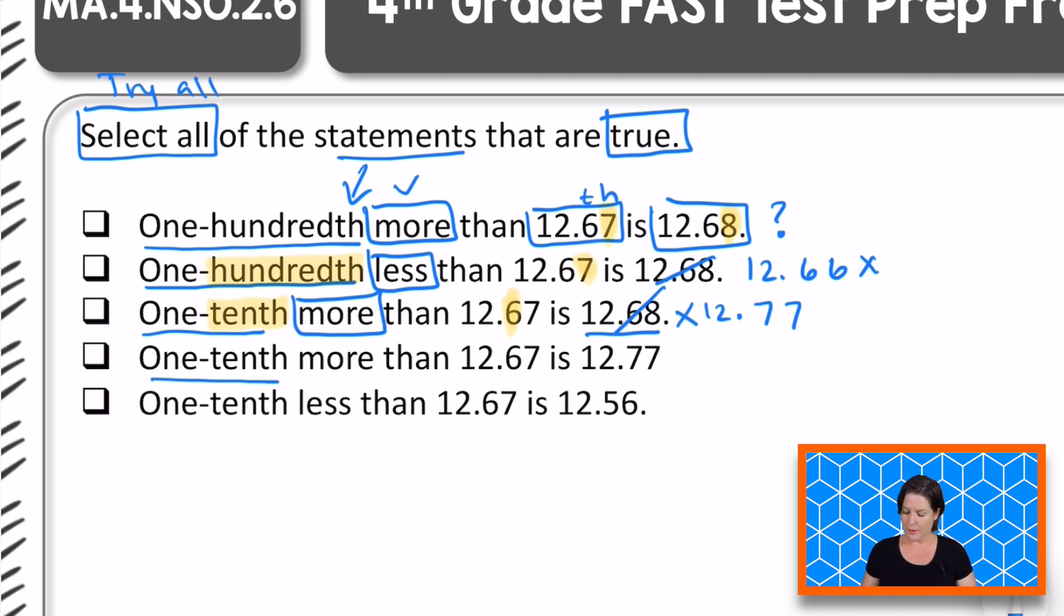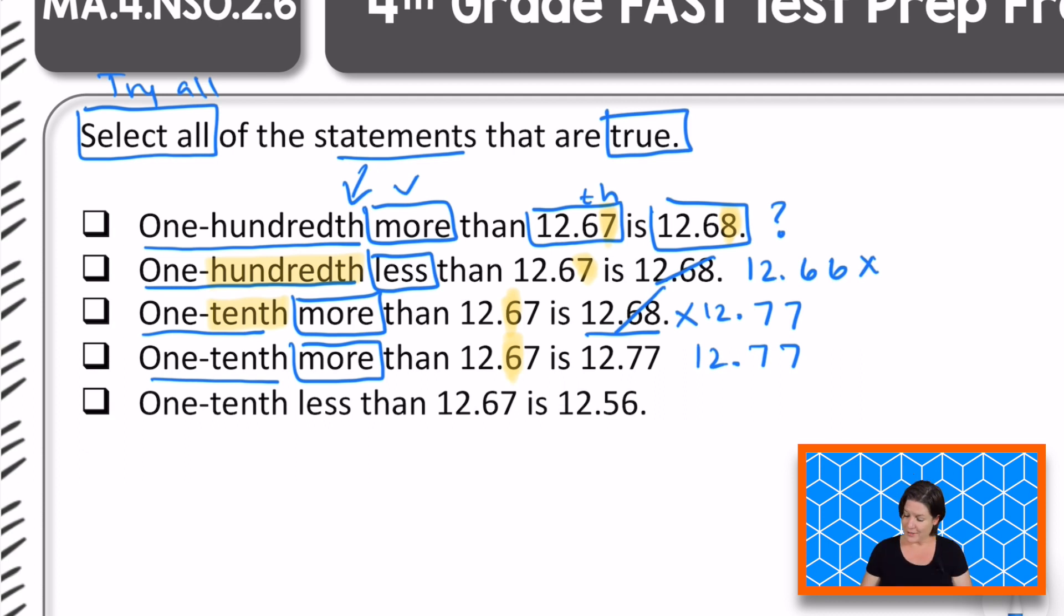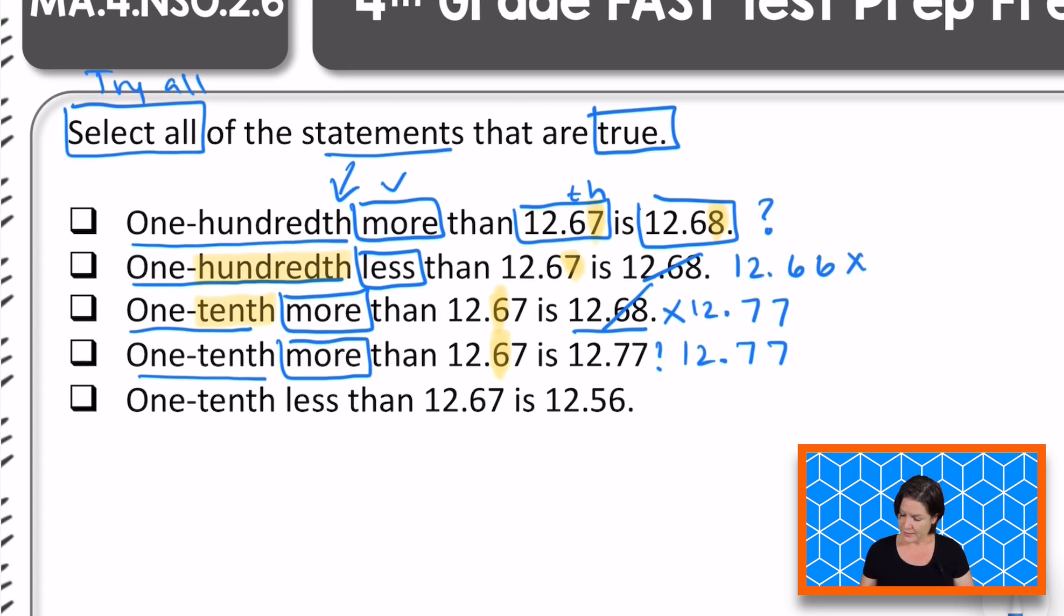The next one: one-tenth more than 12 and 67 hundredths. One tenth is right there. So 12 and 67 hundredths, let's bump that six up to seven. 77 hundredths is 12 and 77 hundredths. So should we keep that statement or eliminate it? Let's keep it.